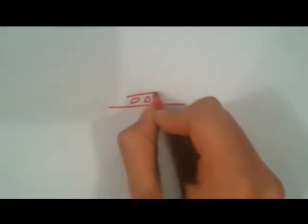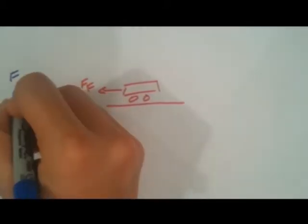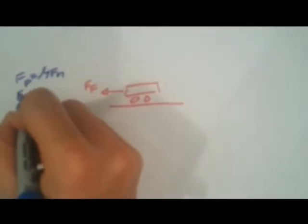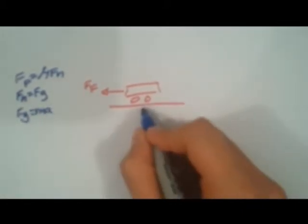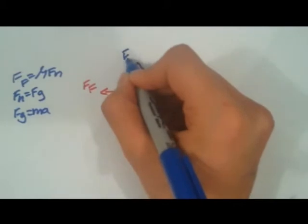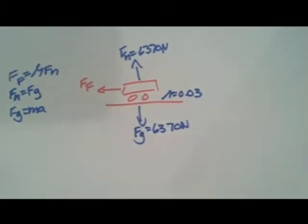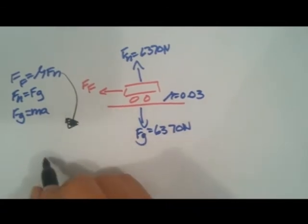The force of friction is calculated as force of friction equals mu Fn. Fn equals Fg. The force of gravity is Fg equals Ma, which equals 6,370 newtons. Usually the mu for kinetic friction on roads in regular conditions is 0.03. So then the force of friction would be 191.1 newtons of force.